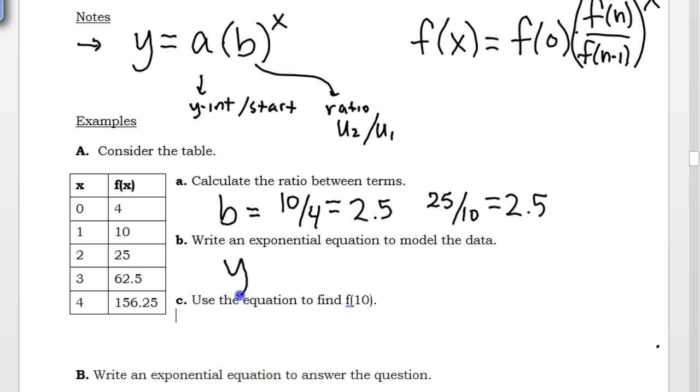When I'm writing my y equals equation, then, that's the value that's going to go where my ratio is in my parentheses. Now the a parameter in my equation is the y-intercept, or the starting value. And we find that wherever x is 0. So here's where my x is 0. So then that is going to be my intercept, my starting term. So I have my completed equation, y equals 4 times 2.5 to the power of x. 4 is my starting term, and 2.5 is my ratio.